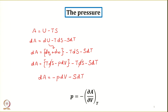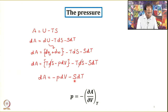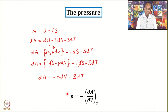The equation dA = -P dV - S dT is important because it allows you to connect changes in Helmholtz function with pressure and entropy, providing pure thermodynamic definitions of both. For pressure specifically, keeping temperature constant (dT = 0), we get P = -(∂A/∂V) at constant T. This is a pure thermodynamic definition of pressure with no assumptions involved.